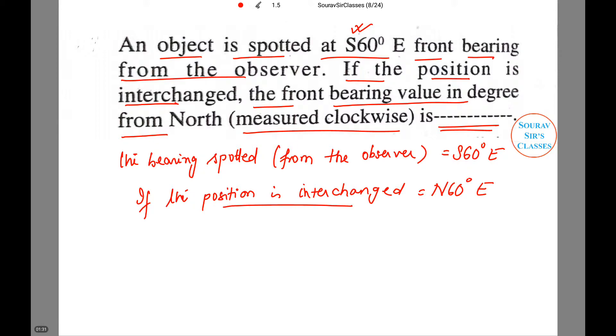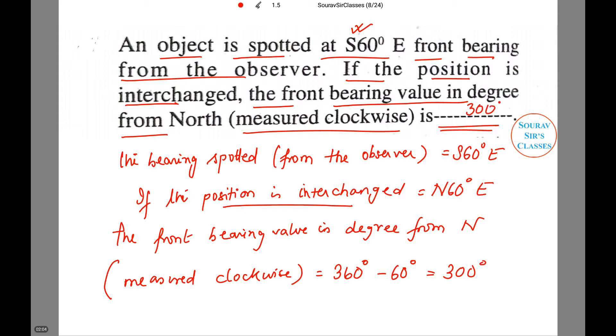Now the front bearing value in degrees from north measured clockwise will be given by 360 degrees minus 60 degrees, which is nothing but 300 degrees. So the answer is 300 degrees.